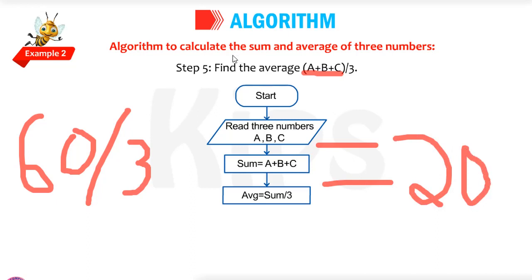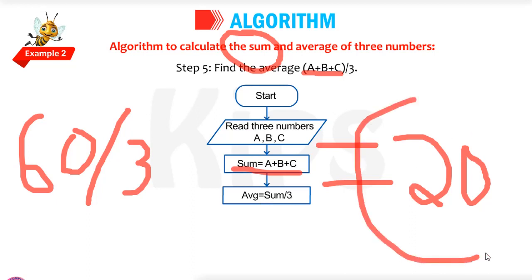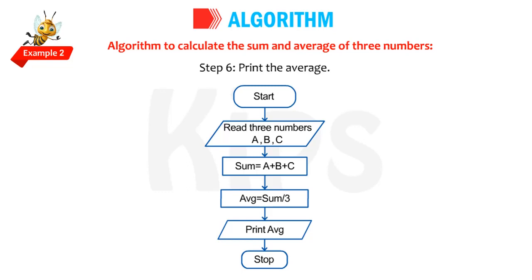There are two outputs. One is the sum: A plus B plus C, which is 10 plus 20 plus 30, equals 60. The average is equal to sum divided by 3, which is 60 divided by 3, equals 20. Now you got the average, but the program is not finished yet.